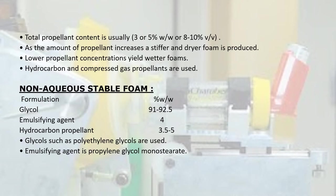Non-aqueous stable foam formulation by weight percentage: Glycol at 91–92.5%, emulsifying agent at 4%, and hydrocarbon propellant at 3.5–5%. Glycols such as polyethylene glycols are used. The emulsifying agent is propylene glycol monostearate.